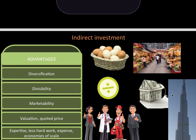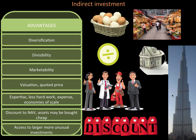The advantages of investing indirectly — because essentially that's what both of these Collective Investment Schemes are — is that it's for somebody who doesn't really know what they're doing in the stock market. They say, 'here's my money, please go and manage it for me.' The company or trust will diversify it into various assets, make it divisible and very marketable, provide quoted prices and valuations, and offer lower expenses due to expertise and economies of scale. You might even buy at a discounted net asset value during a recession, and you gain access to larger and more unusual investments.